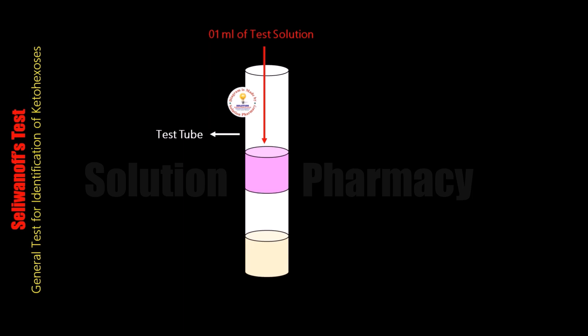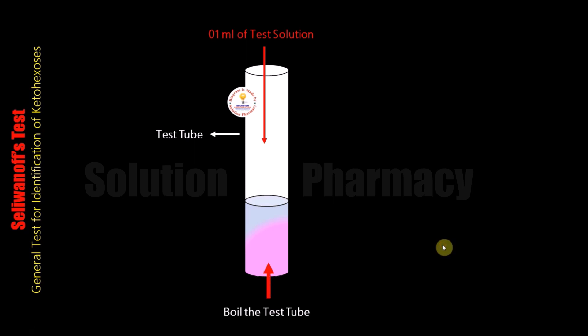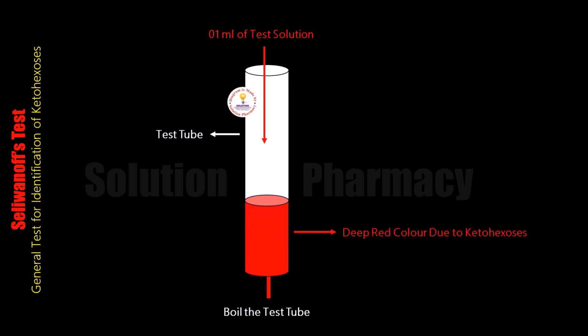After adding the test solution, mix the contents of the test tube and then boil the contents in a water bath for 2 minutes, and then observe any color changes in the test tube. If we observe a red color solution — meaning if the contents of the test tube change to red color — it means keto sugar is present in the test solution. Here you can see that a deep red color formed due to the presence of keto sugar in our sample.